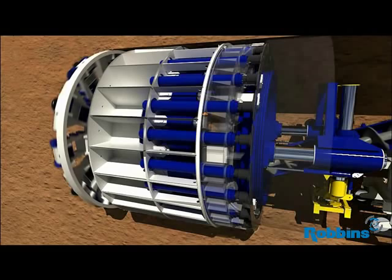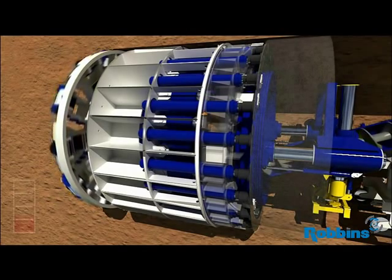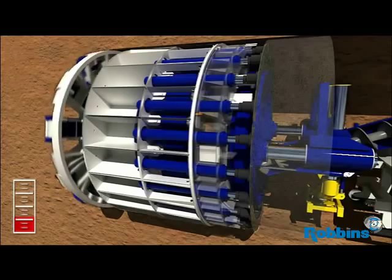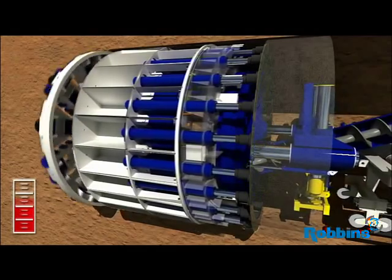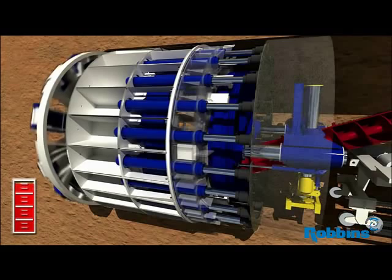A TBM operator can control the pressure in the chamber continuously. To raise pressure, the operator can either increase the machine's rate of advance or decrease the rotation of the screw conveyor.